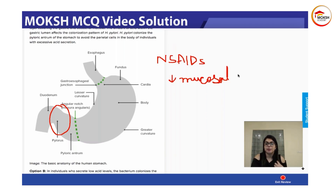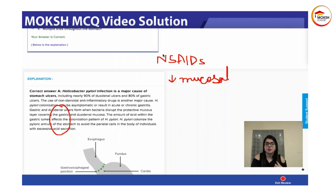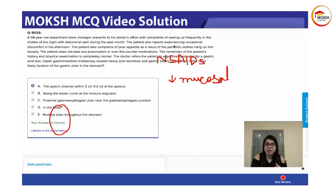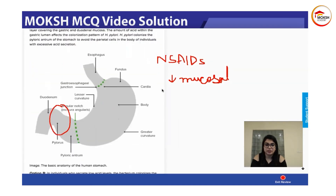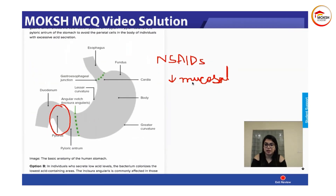A very important point in this question was that the patient does not take NSAIDs — no prescription or over-the-counter medication. That led us to conclude this is probably H. pylori induced. The most common causes of ulcers are H. pylori and NSAIDs.